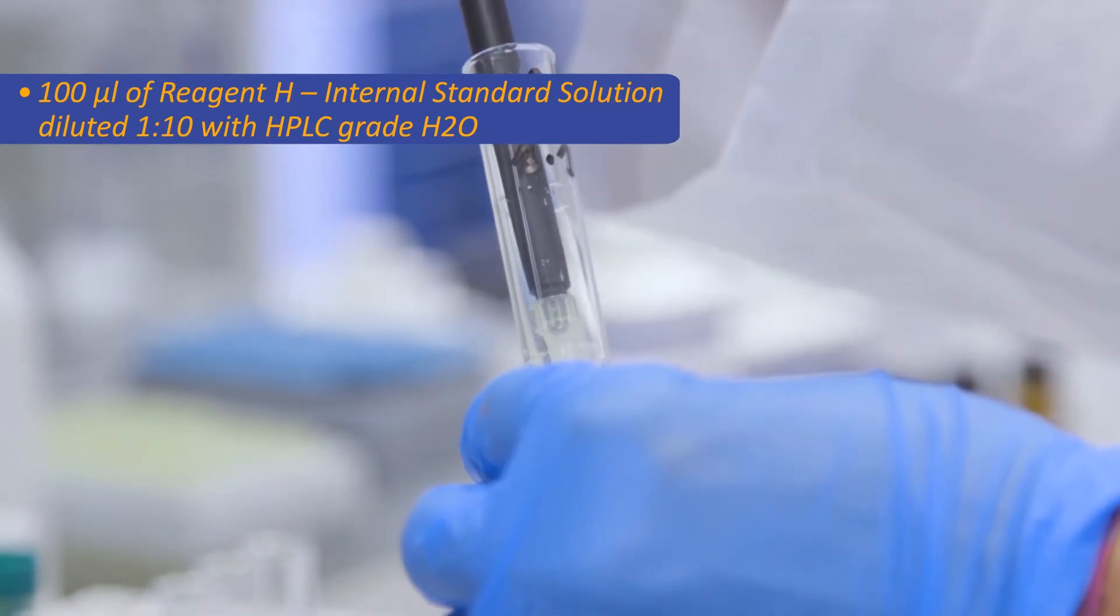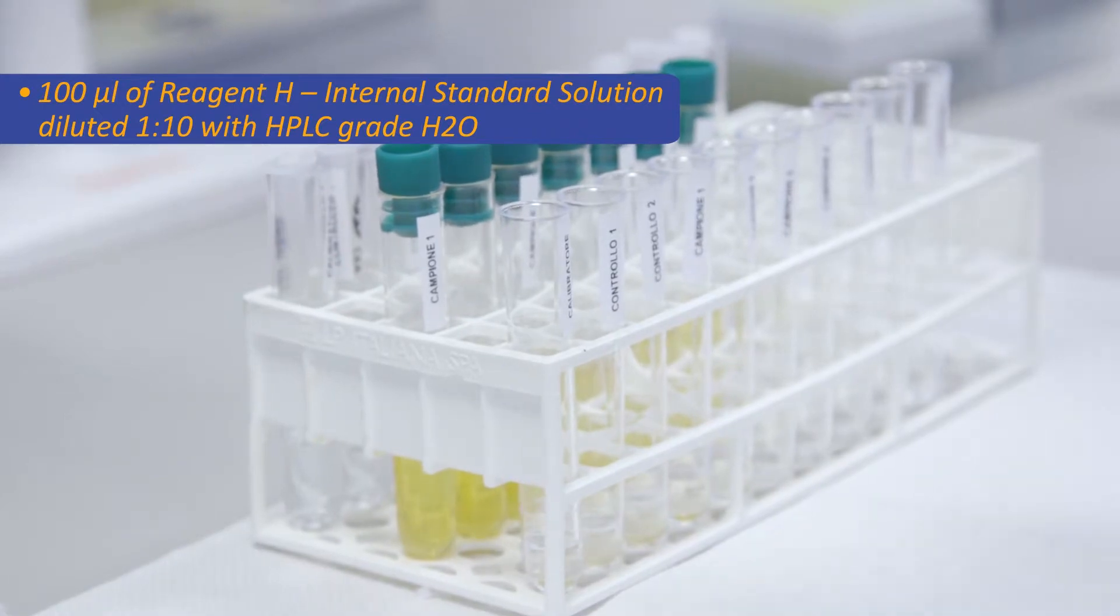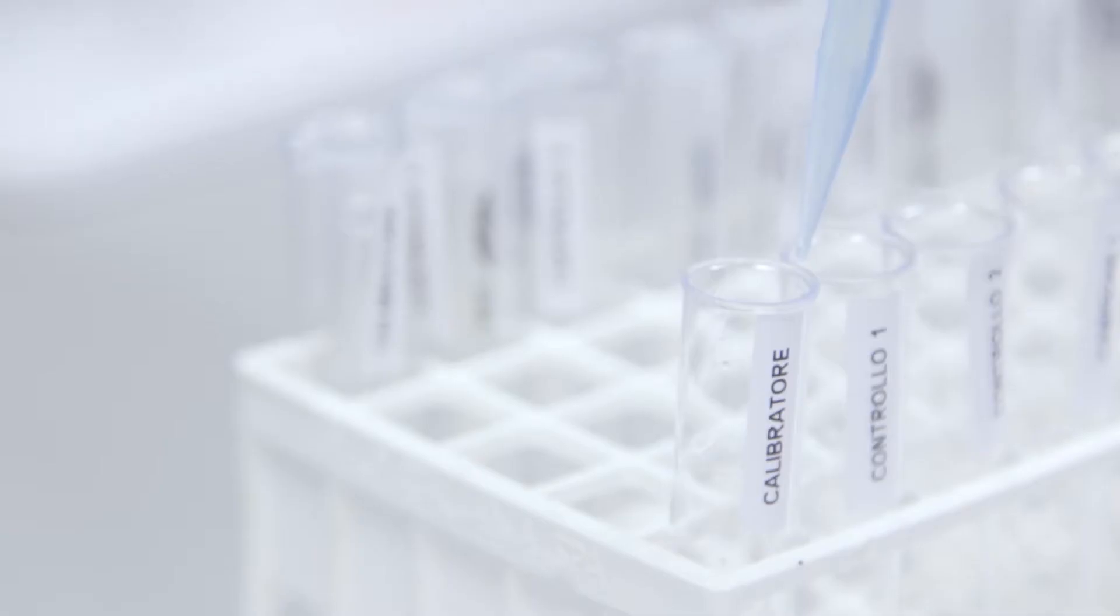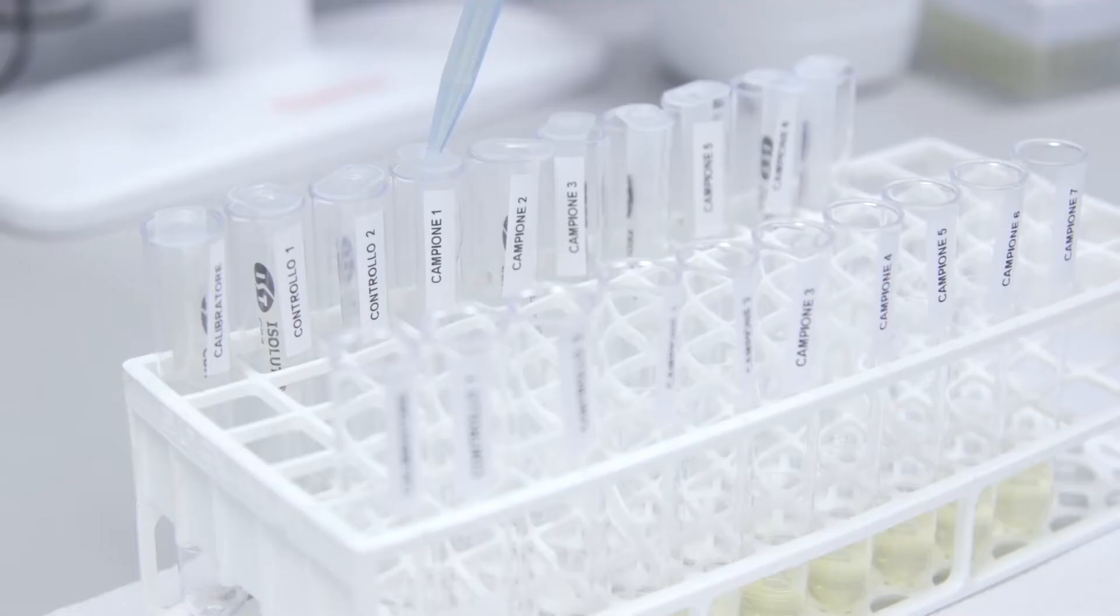We add 100 microliters of internal standard solution diluted 1 in 10 with HPLC grade H2O. Now we add to the already conditioned SPE column 1 milliliter of calibrator sample and control prepared in the previous step.